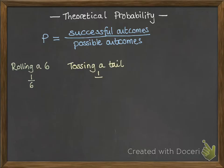You could think about tossing a tail when you toss a coin. The number of ways to be successful there is one. There's only one tail and there's two possibilities, either head or tail.